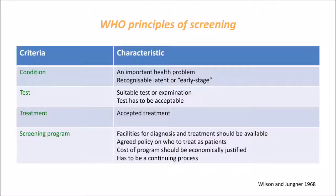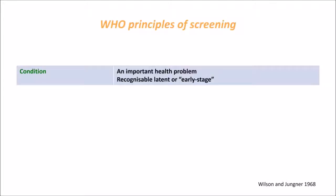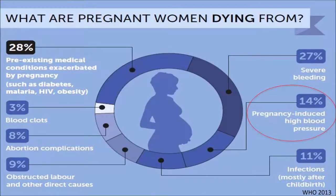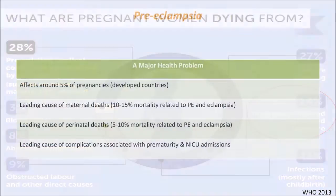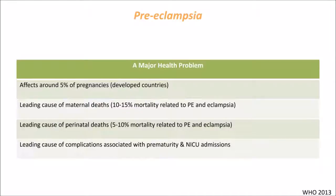Let's first assess whether pre-eclampsia meets the first criteria — is it an important health problem with a recognizable latent or early phase? Hypertensive disorders of pregnancy are a major global health problem: 15% of maternal deaths worldwide are directly related to pre-eclampsia. In developed countries it affects about 5% of all pregnancies and is a leading cause of maternal deaths, responsible for up to 10–15% of mortality related to hypertensive disorders of pregnancy.